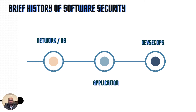Now it's become common. We have things like web application firewalls, AppSec reviews, secure coding, SAST, DAST, IAST, all those things. And today, software security has evolved to cover technology like serverless, API security, pipeline security, DevSecOps — all these things are there.